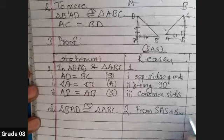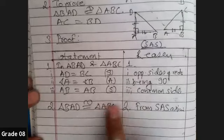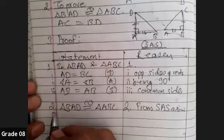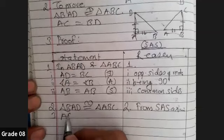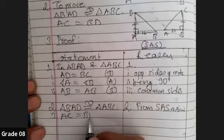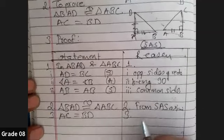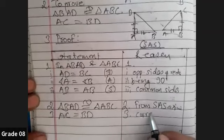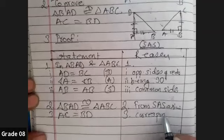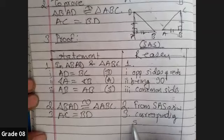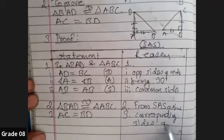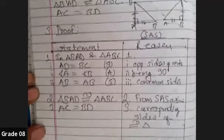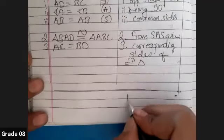And after writing this thing, you have access to write this AC equals to BD for free. AC equals to BD. And the reason is corresponding sides of congruent triangle. So in this way, it is hence proved.